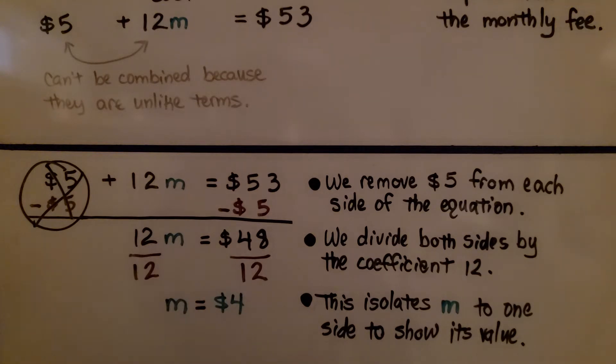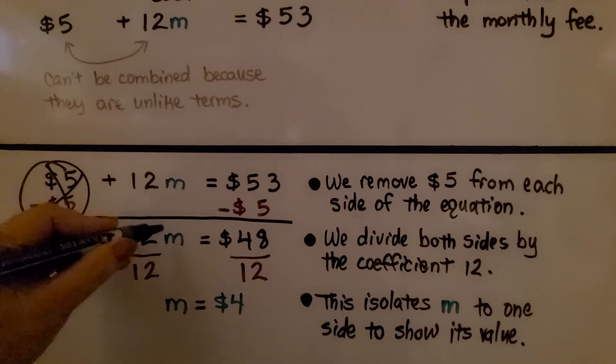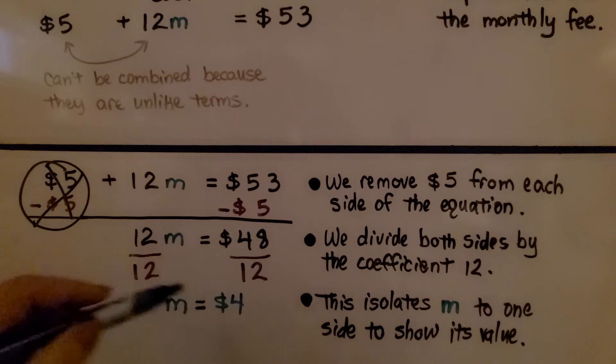Now we divide both sides by this coefficient 12. We have 12 times some number M equals $48. Now I know some of you could probably just do this in your head, but we're trying to show how to write these equations. So I'm using some easier numbers.